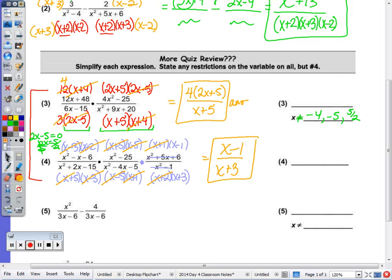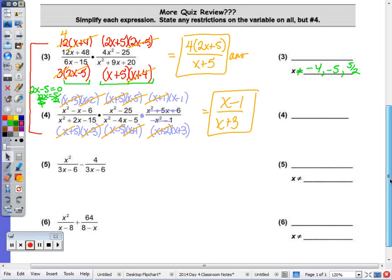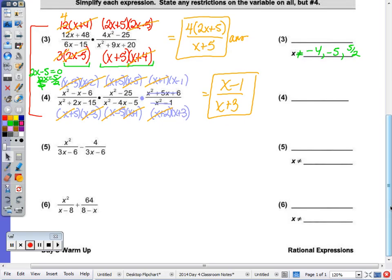Now on to addition and subtraction with a like denominator. So number 5, when the denominators are like, the first thing you want to do is copy down your denominator. So this would be 3x minus 6, and then subtract because you can't take away 4 from x squared, I write x squared minus 4.